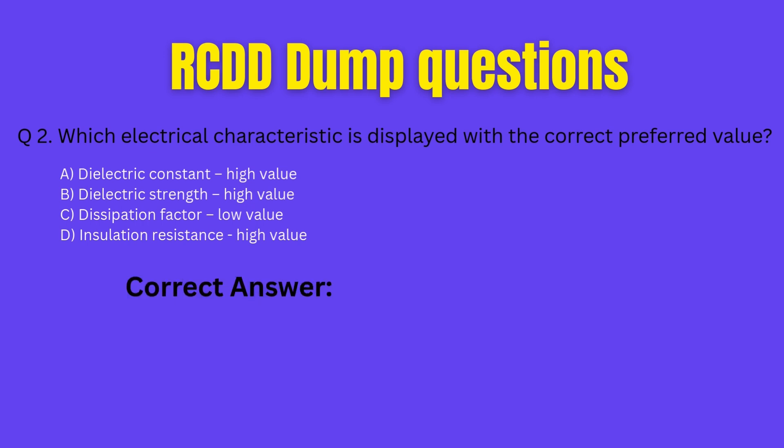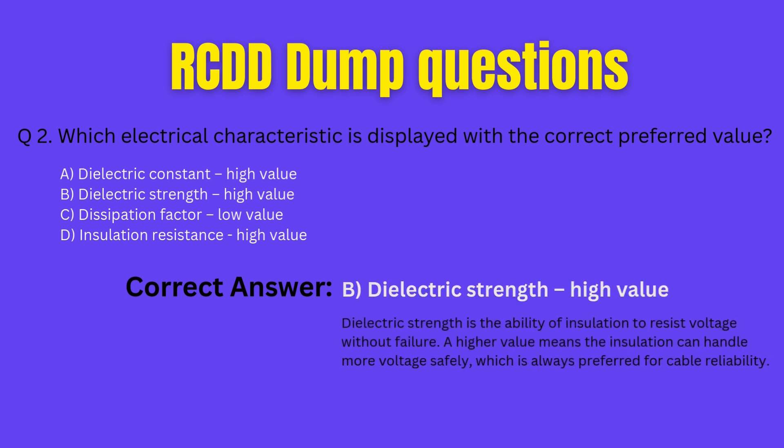Let's check the correct choice. Correct answer: B. Dielectric strength, high value. Explanation: dielectric strength is the ability of insulation to resist voltage without failure. A higher value means the insulation can handle more voltage safely, which is always preferred for cable reliability.